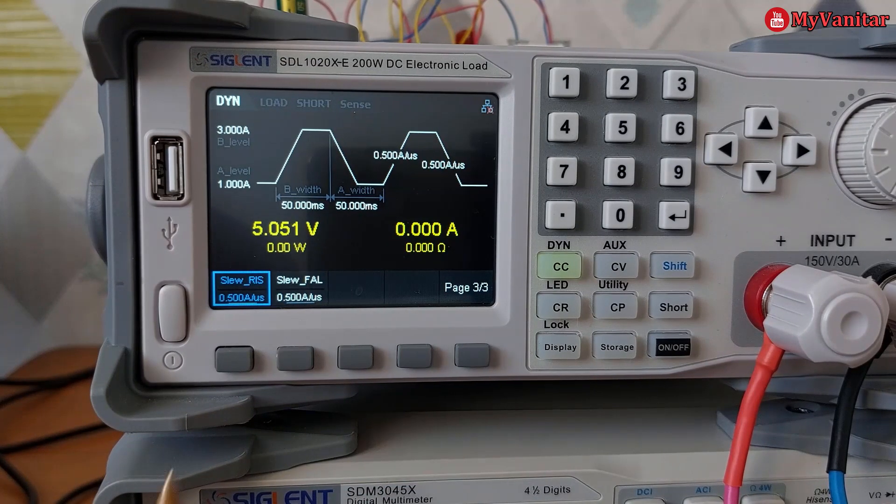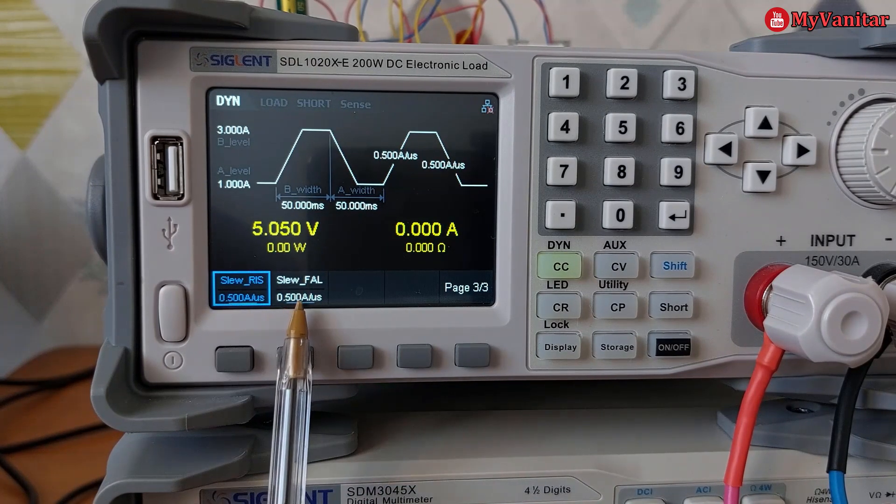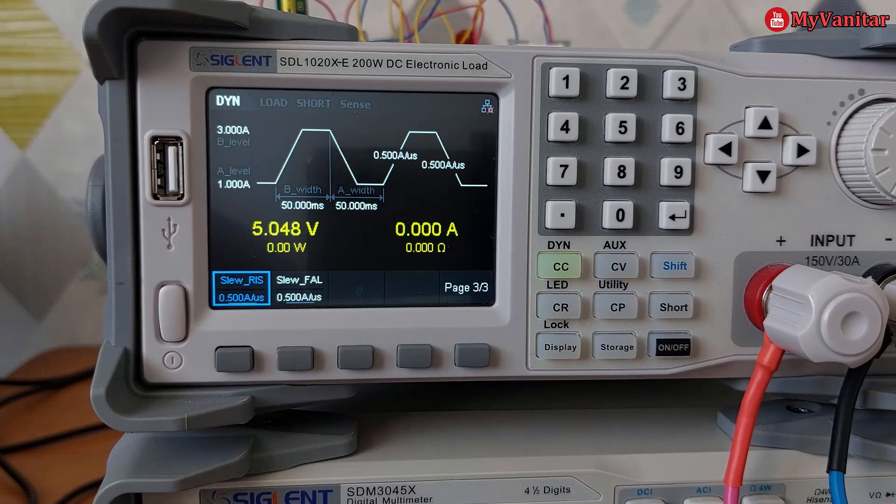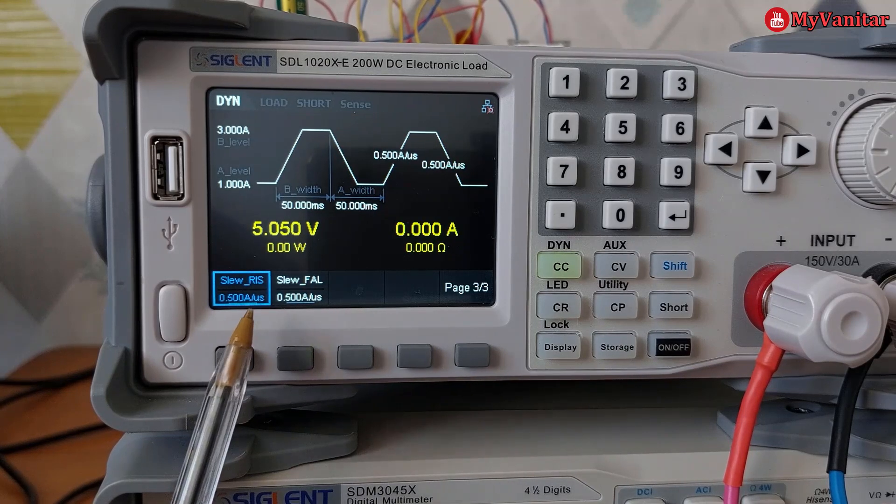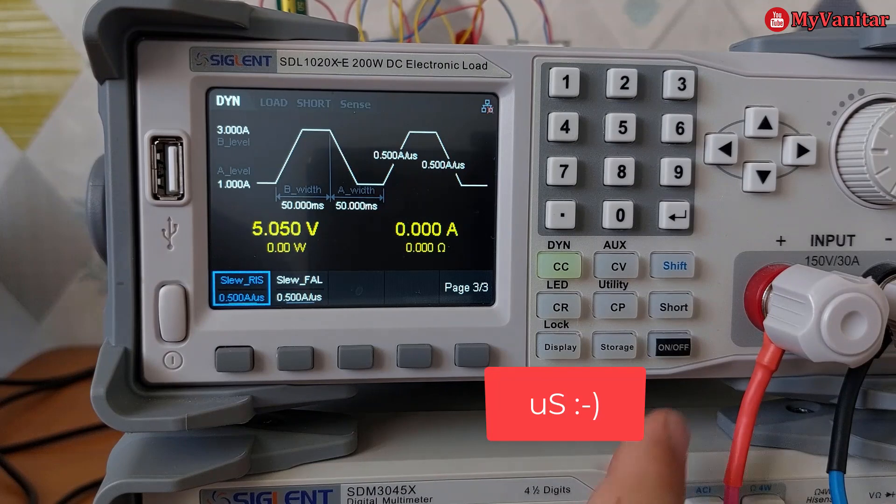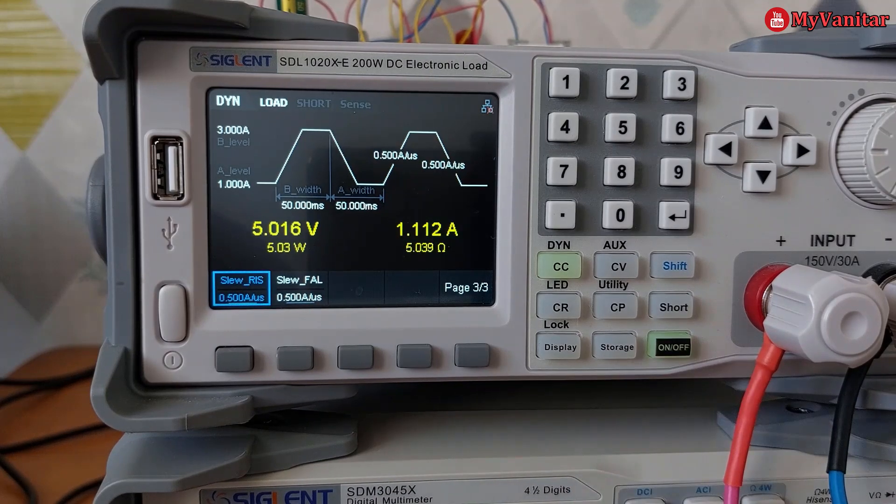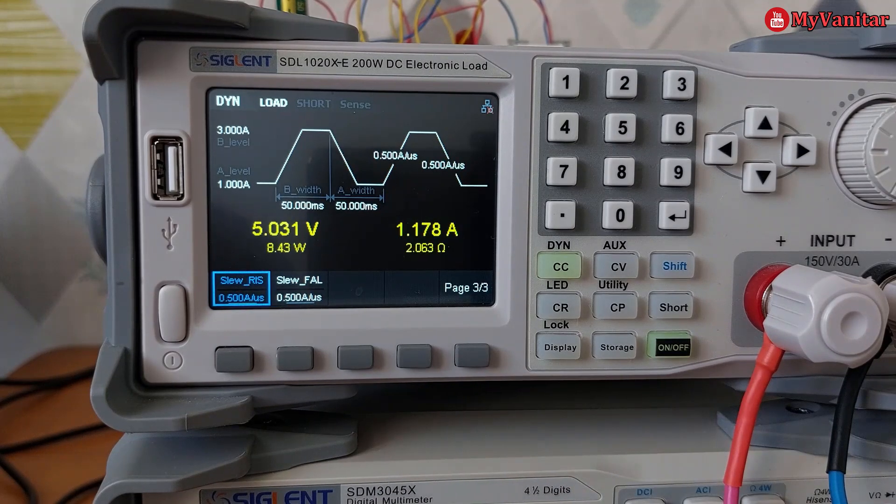The rising slew rate and falling slew rate - we can leave it as is, half an amp per second. Let's turn on the output. I will go to the oscilloscope screen and show you the results.